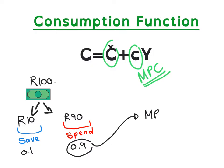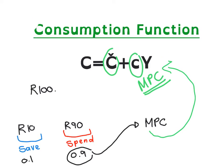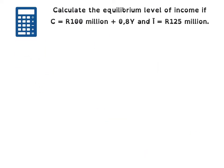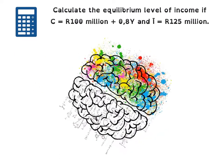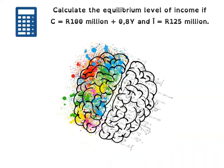So in other words, your marginal propensity to consume is the amount of money that you are going to spend given your income. Calculations will be done in the next video.